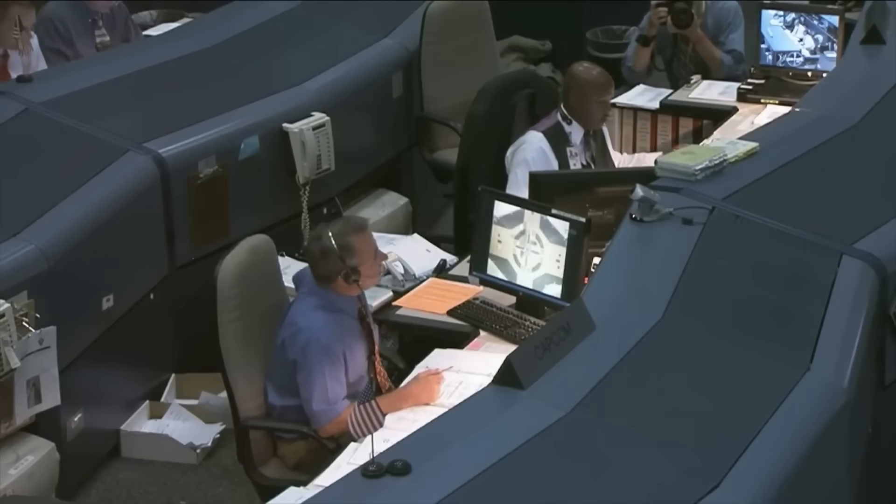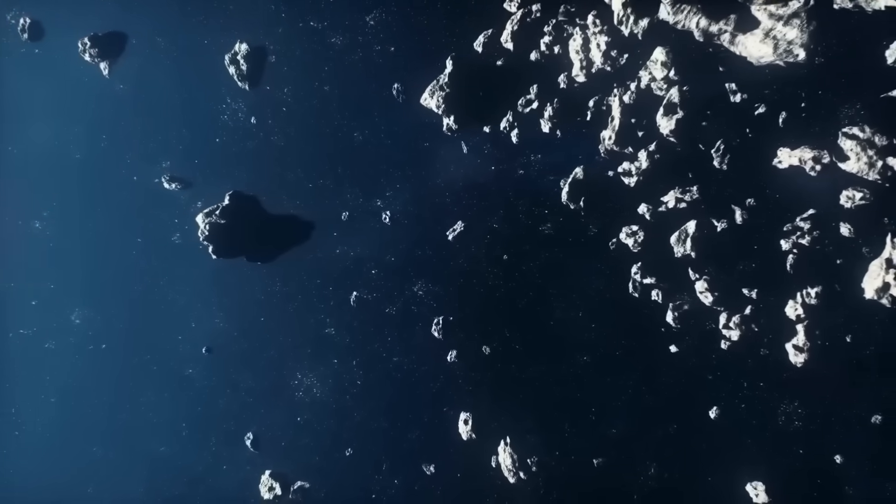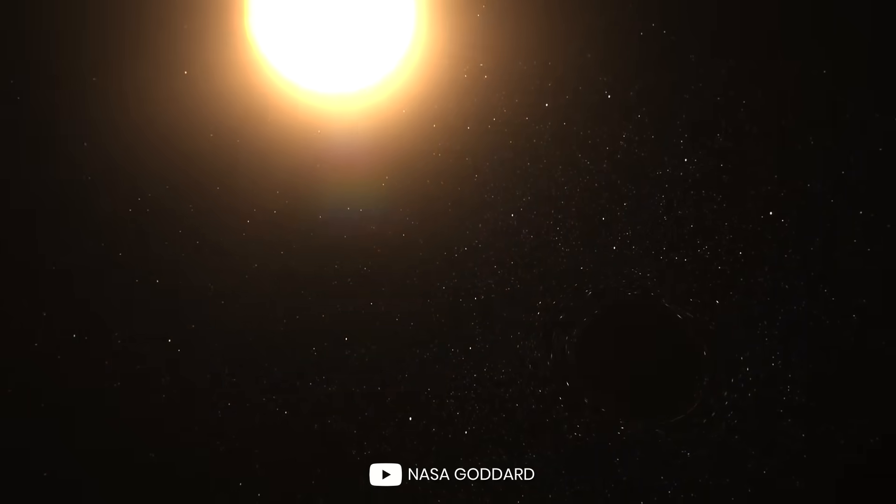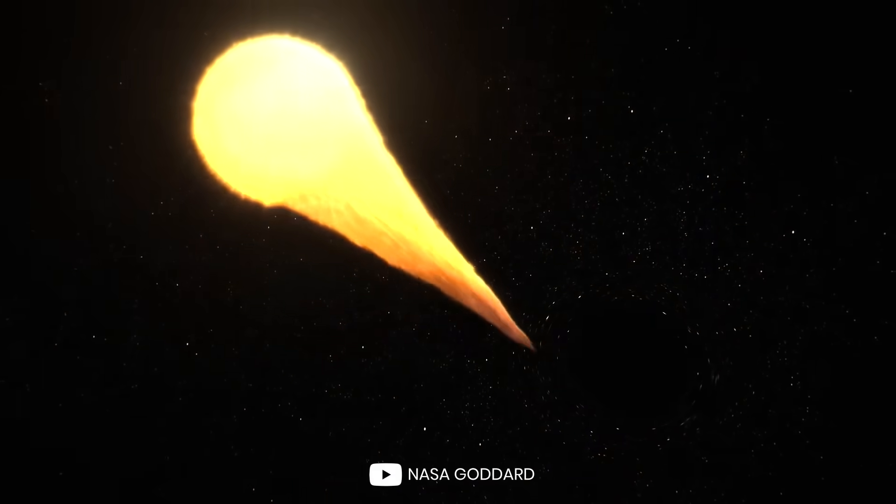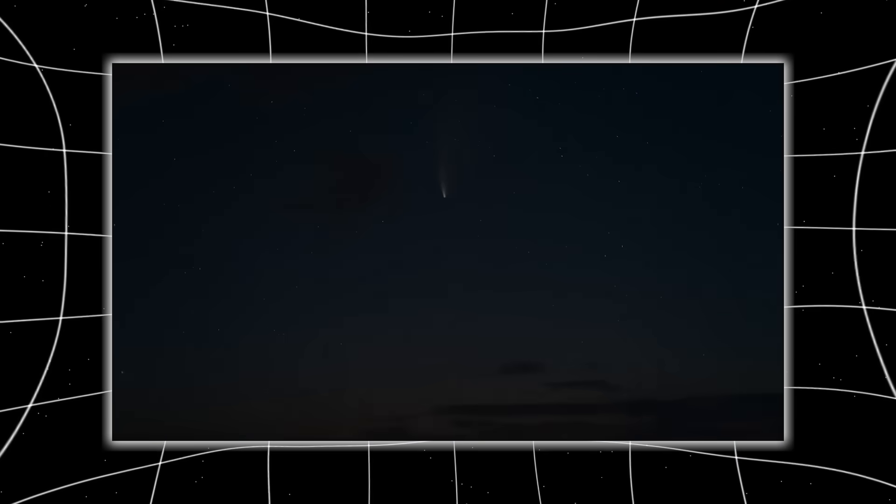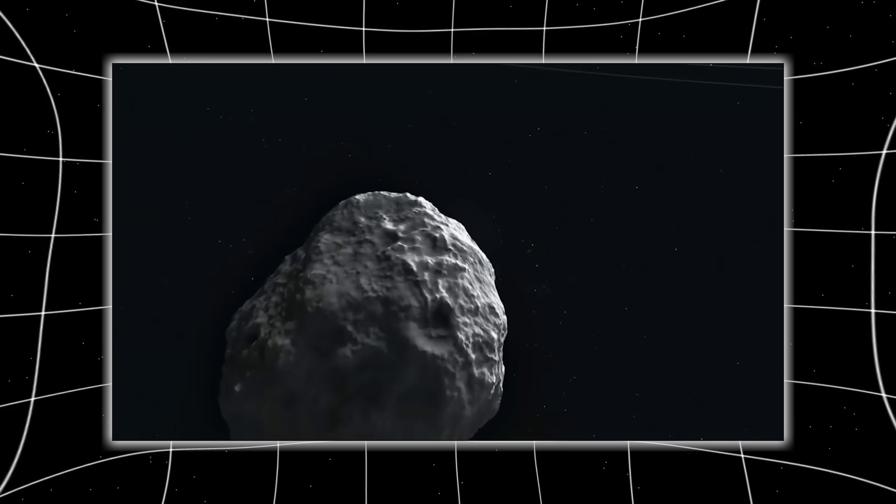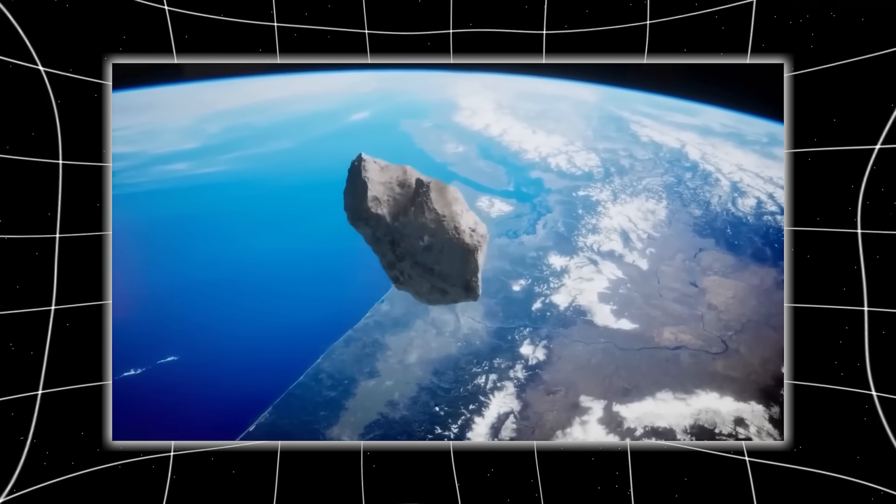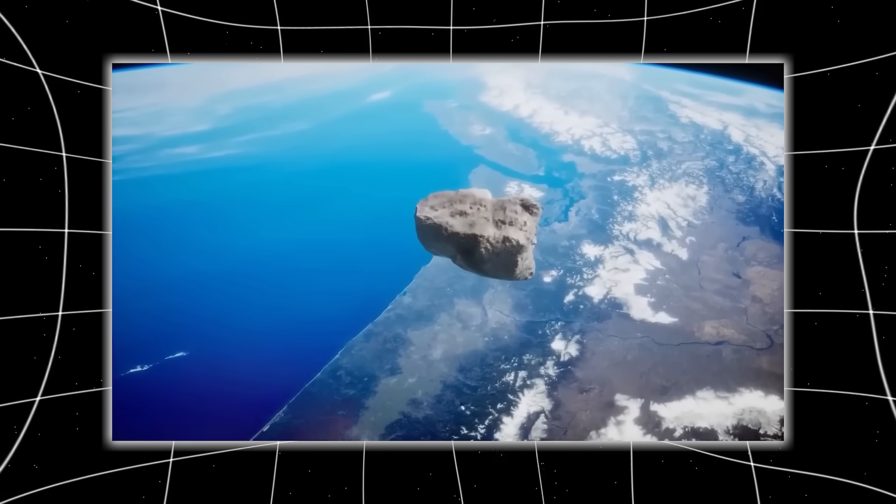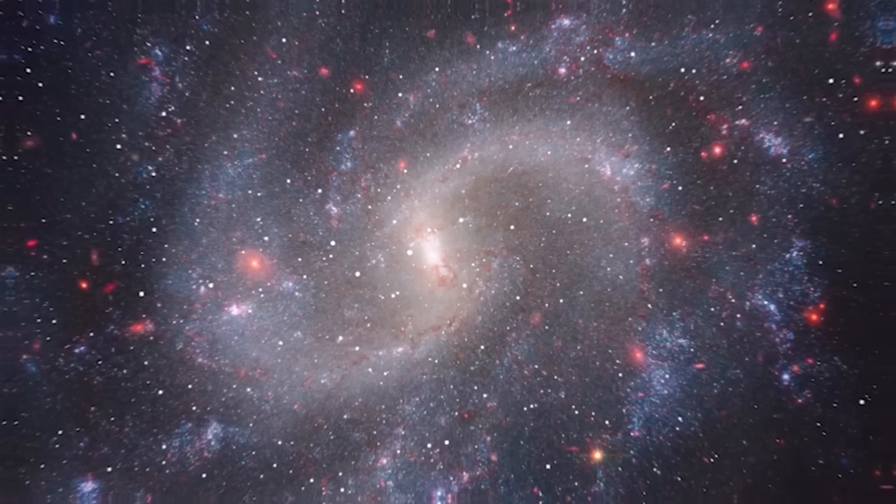As scientists continued to track 3I Atlas, one detail grew harder to dismiss. Its trajectory appeared to be carefully mapped to avoid Earth. When plotted against the orbital paths of the planets, the object's route seemed too perfect, skimming the gravitational fields of Mars and Jupiter but steering just wide of our planet by millions of miles. At first, this was written off as coincidence, the natural product of a random hyperbolic orbit. But statistical models showed something far stranger. The probability of such a perfect avoidance occurring naturally was vanishingly small. This was not the chaotic wandering of a cometary fragment. It was precision.